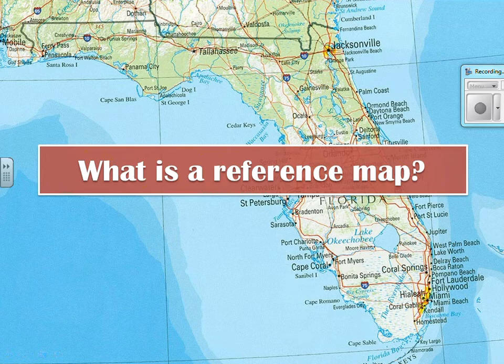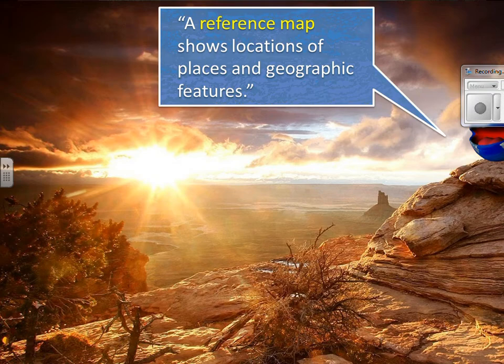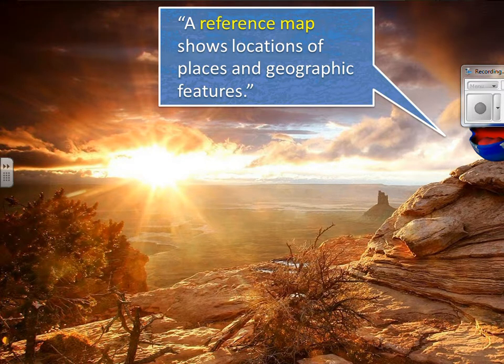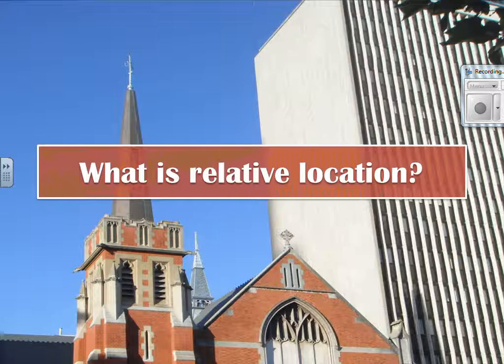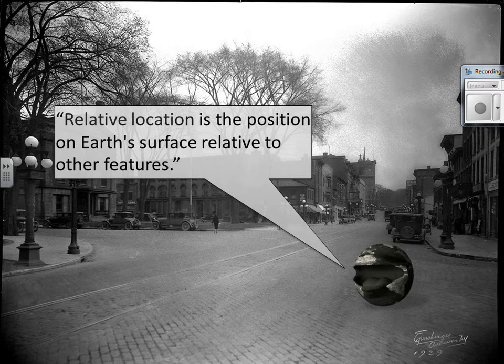Different types of maps — this is a big deal in geography, and you're going to use different maps for different purposes. The first is a reference map, which shows locations of places and geographic features. You may have a map that is just showing the states of the United States — that's a reference map. It may be showing the climates — that's a reference map. It's usually one or two different ideas that you refer to when looking something up. Oftentimes these have relative location.